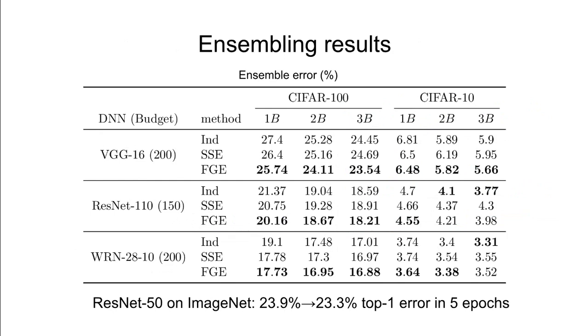In the slide, we show the improvement in test error for different computational budgets. For example, we are able to improve the top-1 error of a ResNet50 on ImageNet by 0.6% in just five additional epochs of training.